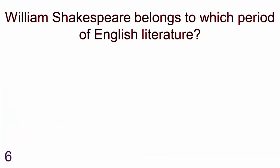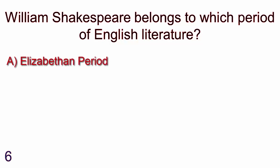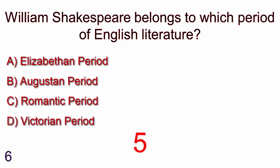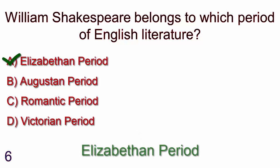William Shakespeare belongs to which period of English literature? Elizabethan period, Augustan period, Romantic period, Victorian period. Answer is Elizabethan period.